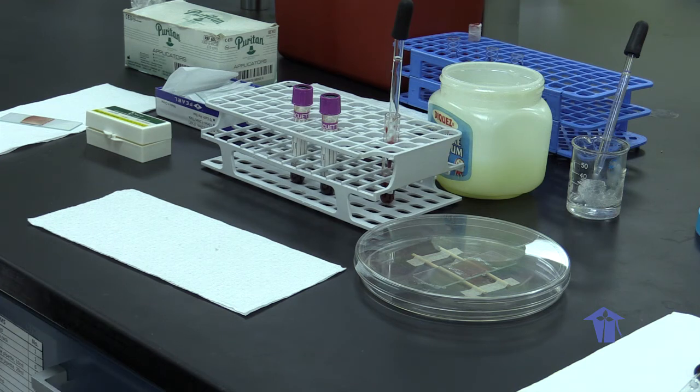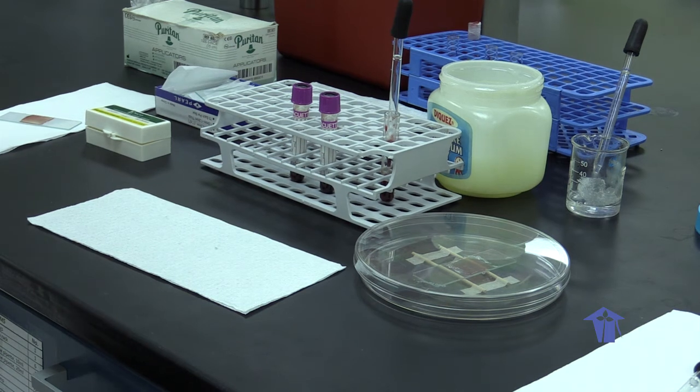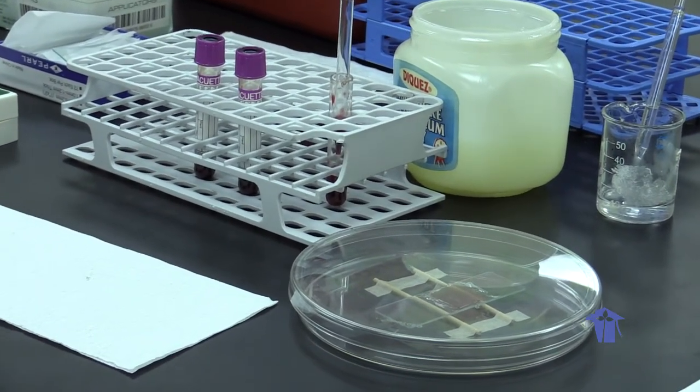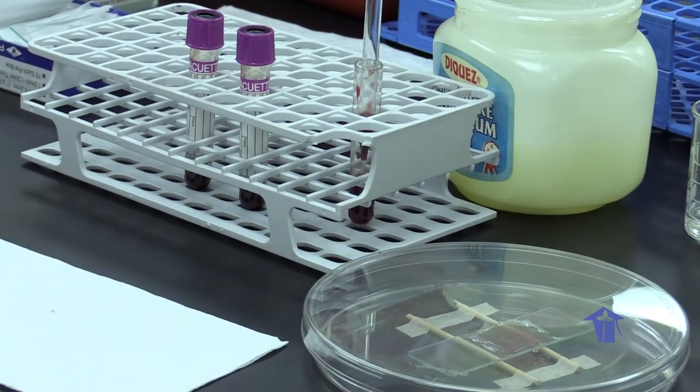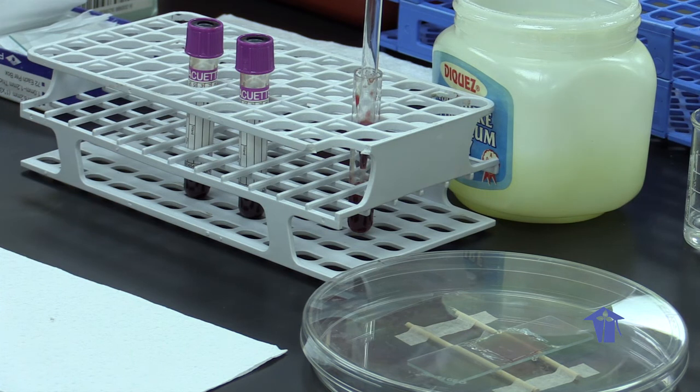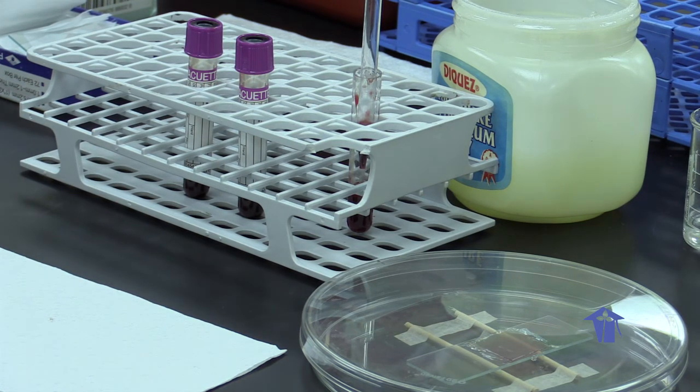You have elliptocytes or ovalocytes, which are red cells that have a very elongated shape. They may even look like thin pieces of pencil and can be confused with sickle cells. So you have to be careful when interpreting your sickle cells that you don't confuse them with other red cell abnormalities.